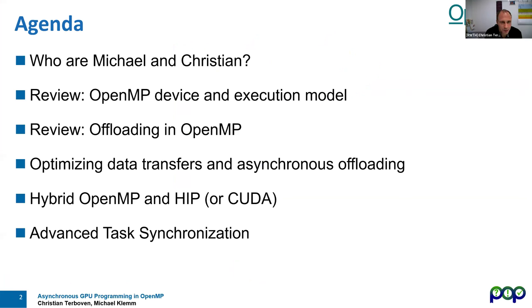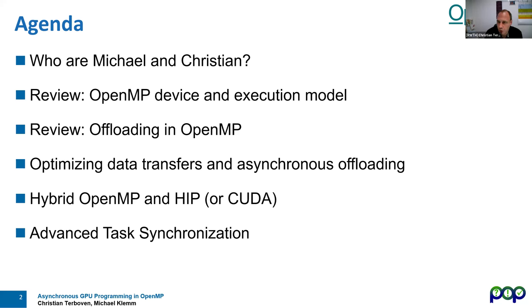We will start with a few sentences on the two speakers, and we'll switch back and forth between Michael and myself. After that, we'll briefly review the OpenMP device and execution model. Michael will give an overview of offloading in OpenMP in general, I'll talk about optimizing data transfer and support for asynchronous offloading. Michael will talk about how OpenMP integrates with HIP or CUDA, and finally we'll put everything together for asynchronous GPU programming with OpenMP interacting with HIP, MPI, or other programming models — what we call advanced task synchronization.